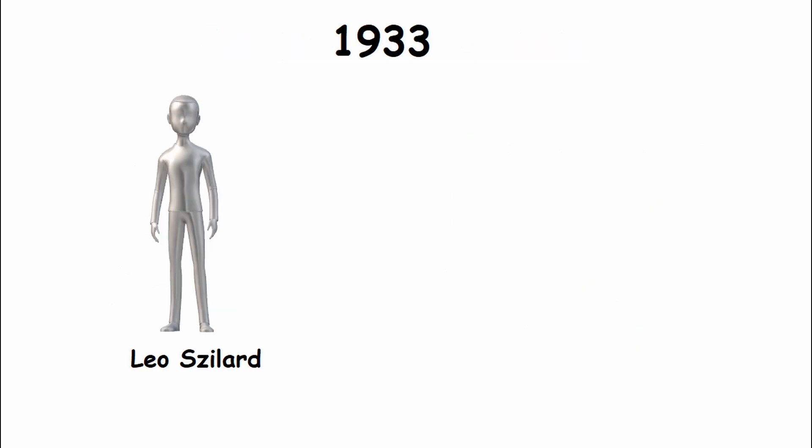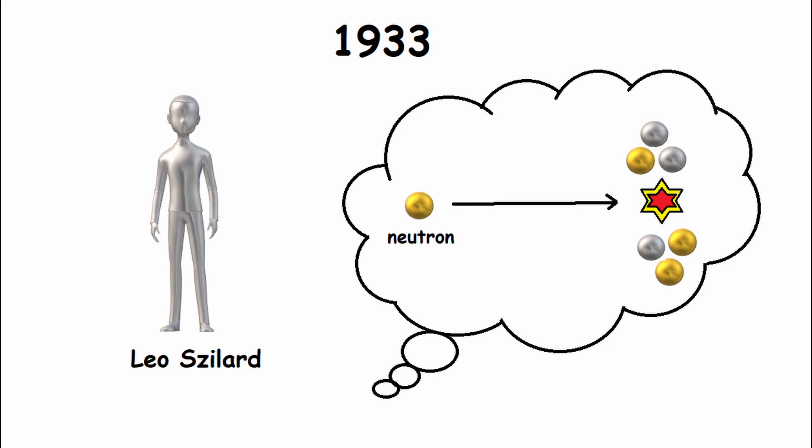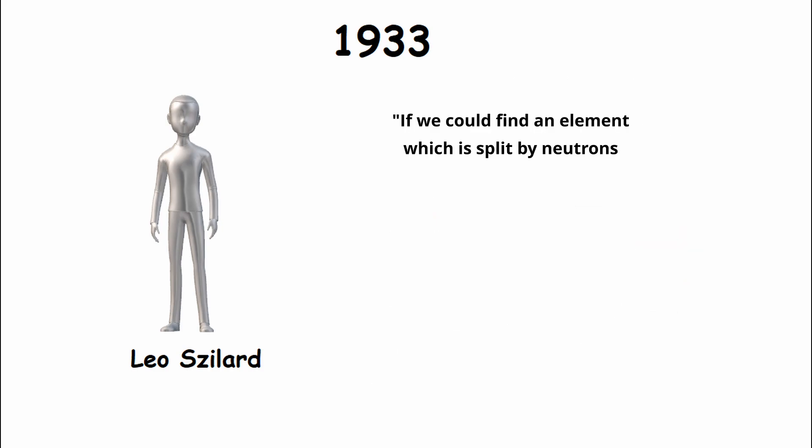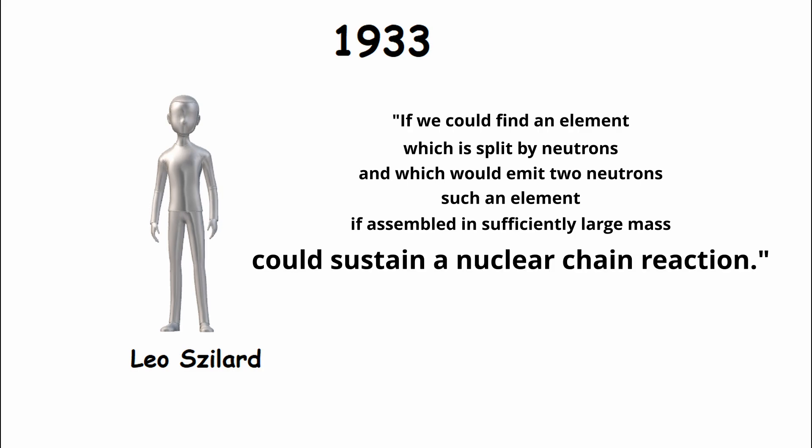In 1933, Leo Szilard was thinking about splitting atomic nuclei with neutrons when it occurred to him that if you could find an element whose nucleus was split by neutrons, and that released two neutrons each time it absorbed one neutron, then such an element, if assembled in sufficiently large mass, could sustain a nuclear chain reaction.